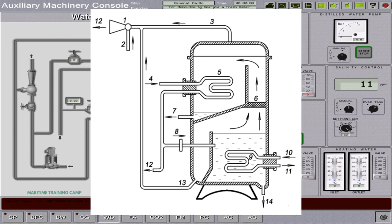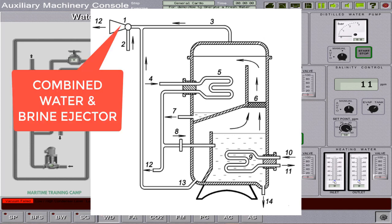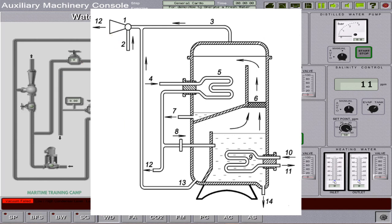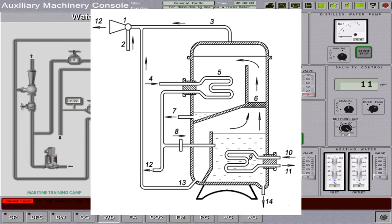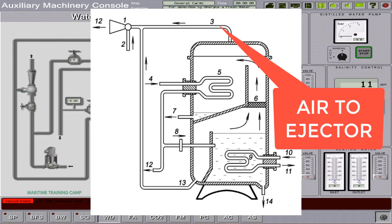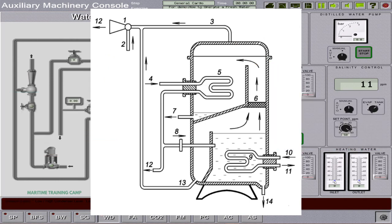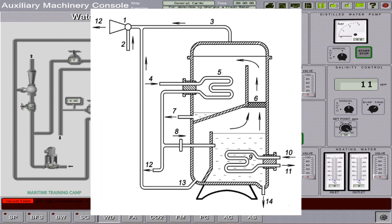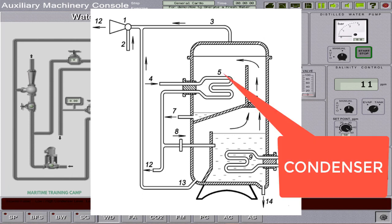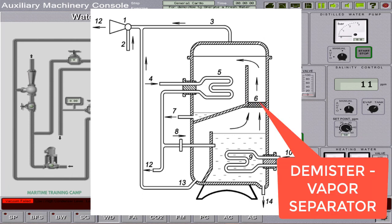Part 1 is the combined water and brine ejector. Number 2 is the ejecting water inlet. Number 3 is air to ejector. Number 4 is the supply of cooling seawater inlet to the condenser. Number 5 is the condenser unit.